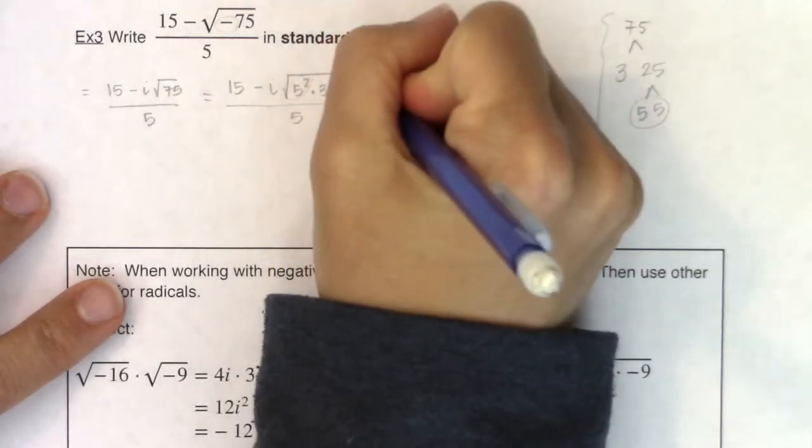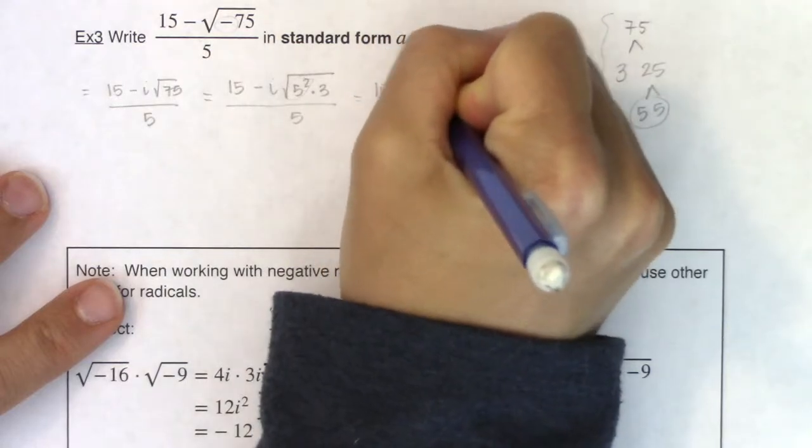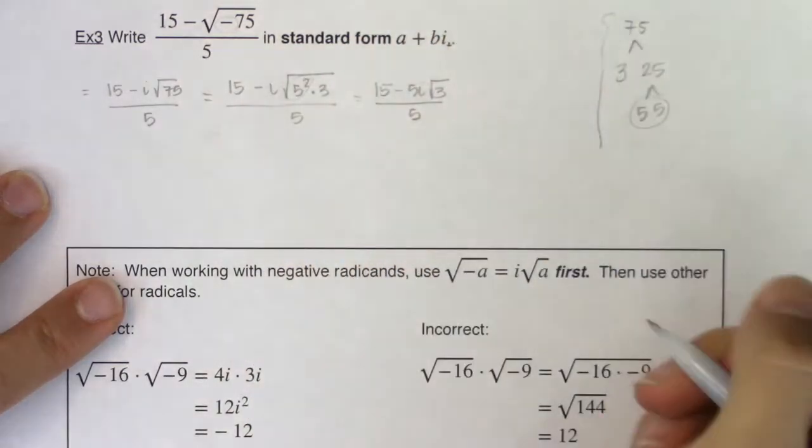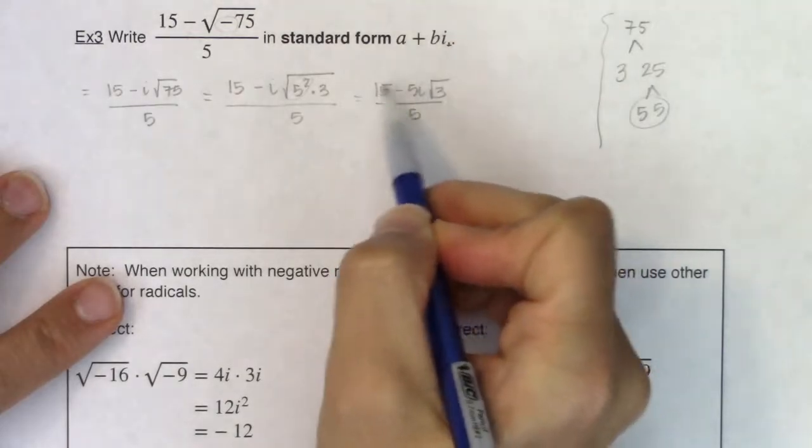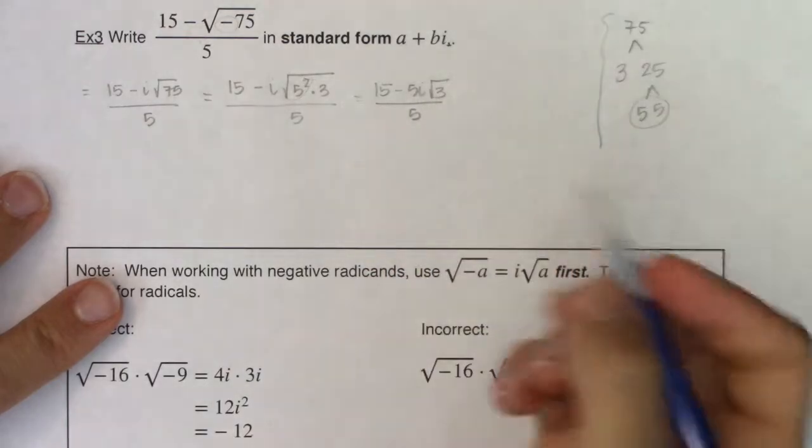So if I take a look at this, this is going to be 15 minus 5i times the square root of 3 over 5. Alright now I need to get it in the form a plus bi. I've simplified the numerator all that I can. These are not like terms so I can't add them.